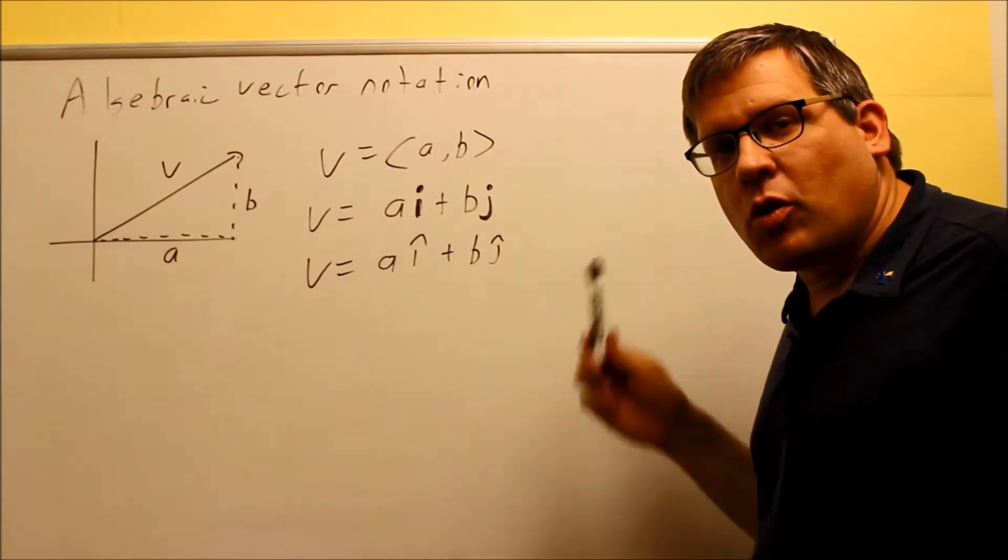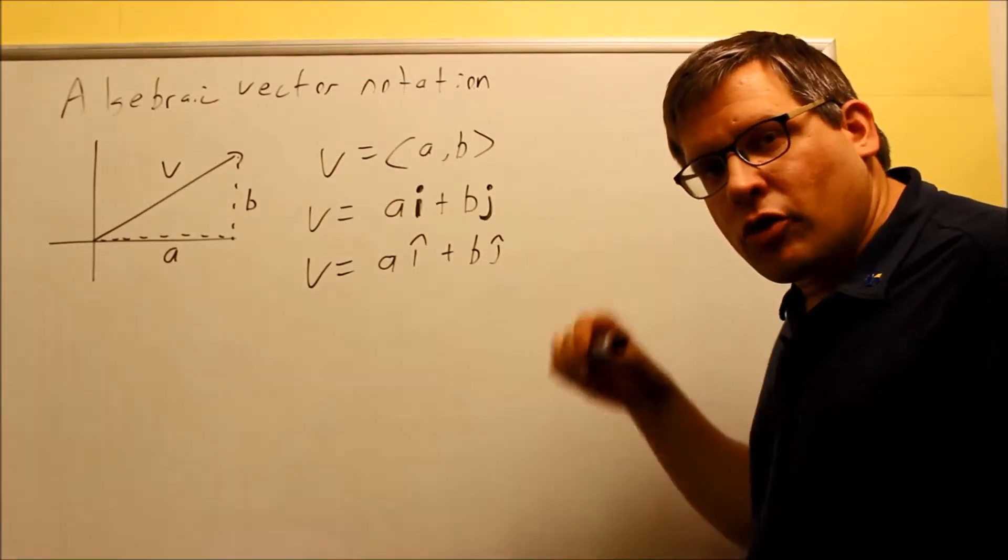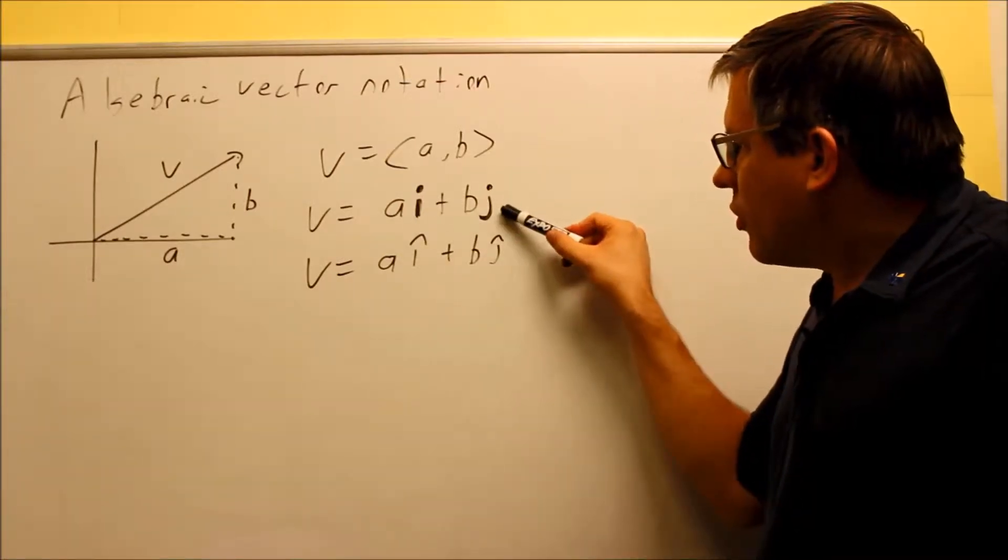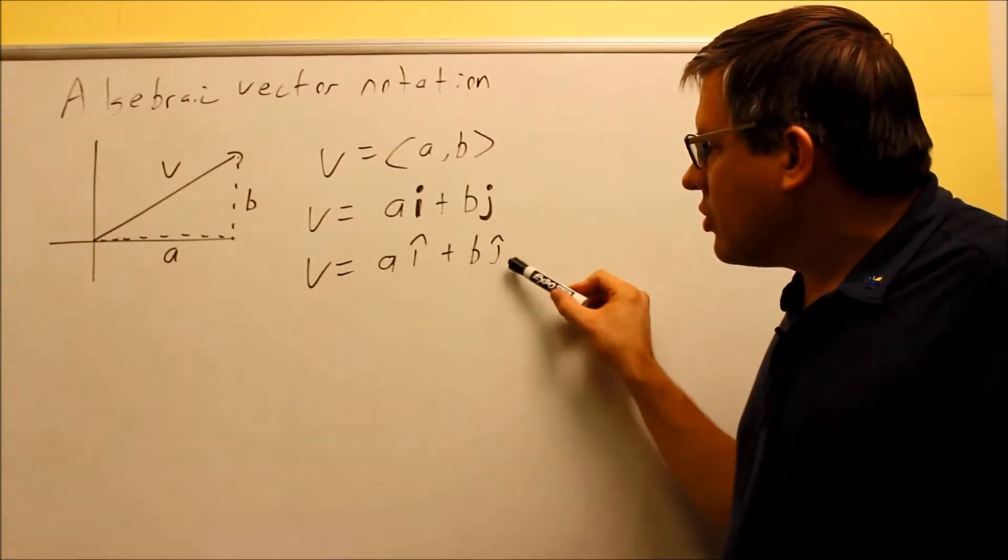The I represents the horizontal component. The J represents the vertical component. So we have horizontal, we have vertical. Same idea here. The I and J means that.